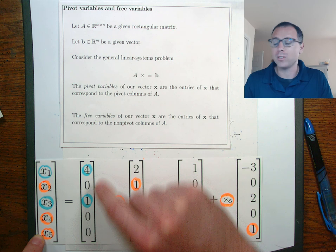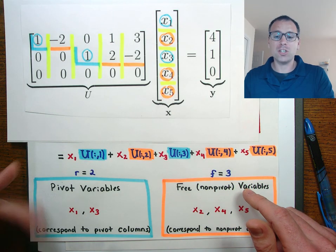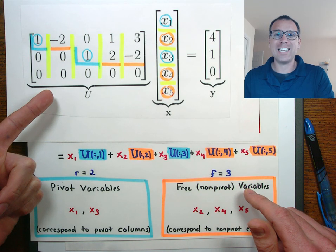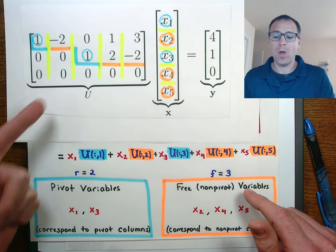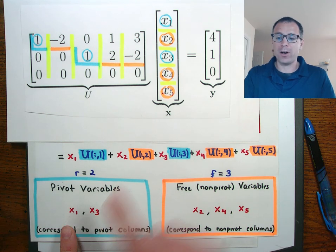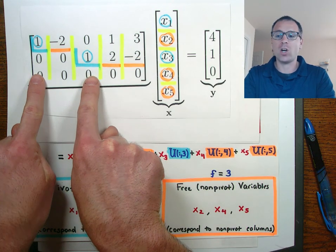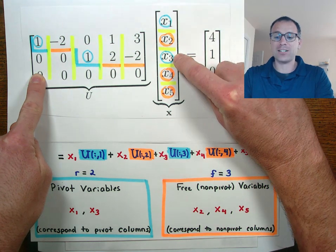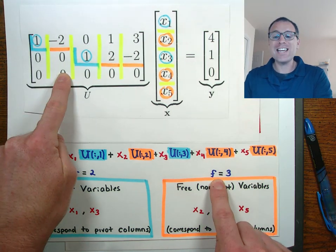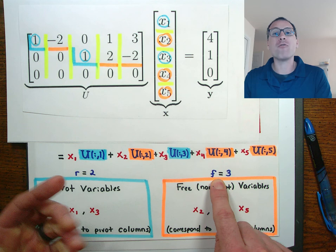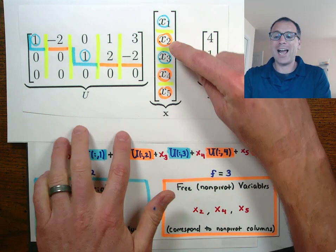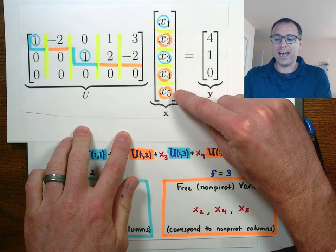Those must be pivot variables. In the parlance of our new definitions, when we look at our toy example one linear systems problem, we see that we have two pivot variables and those correspond with the two pivot columns x1 and x3. And we see we have three free variables, ones that we are free to choose, which are x2, x4, and x5.